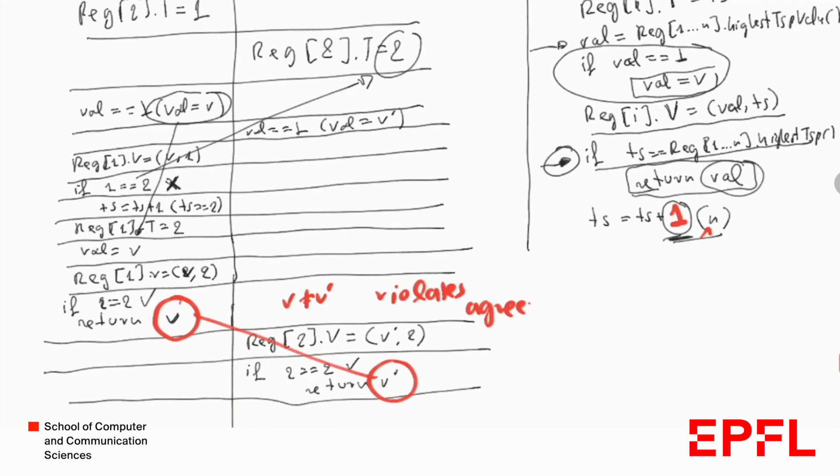So by a small modification — adding 1 instead of n — we see that the algorithm becomes incorrect. As stated before, we need to ensure that different processes always take different timestamps. If this is not the case, then problematic issues arise, as demonstrated in this example.